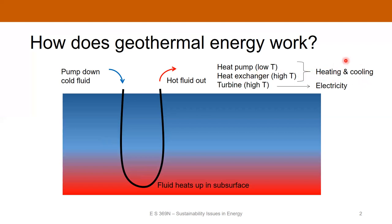Both heat pumps and heat exchangers are efficient for heating and cooling of houses, commercial buildings, and that sort of thing. If you're operating at much higher temperatures — either by drilling very deep, or in a spot with very high temperatures close to the surface like Iceland — you can actually generate electricity directly by passing the fluid through a turbine, either directly as steam or using it to create steam that drives a turbine.